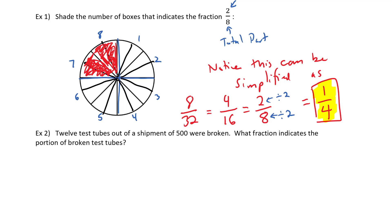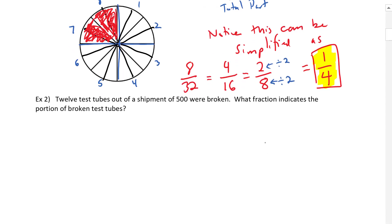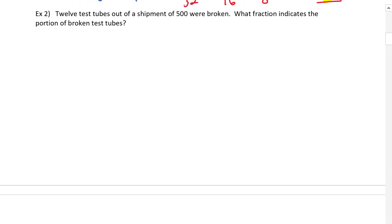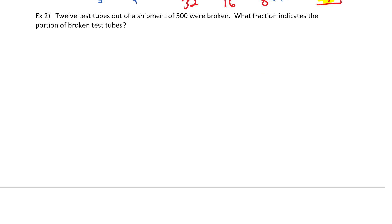Ask yourself: is there a common whole number I can take out of the top and the bottom to simplify it? For example, 12 test tubes out of a shipment of 500 were broken. What fraction indicates the portion of broken test tubes? When we talk about a fraction, the bottom is the total and the top is the part we're referring to.